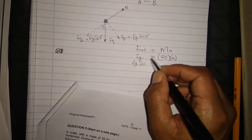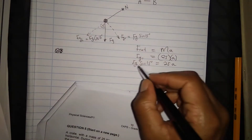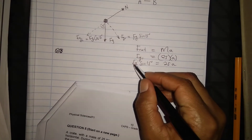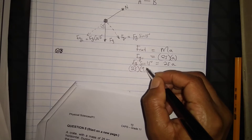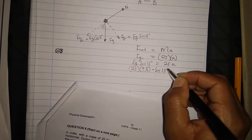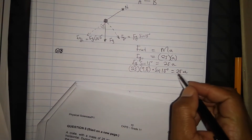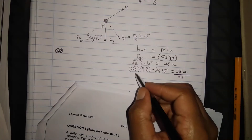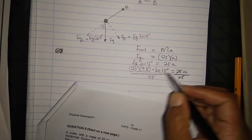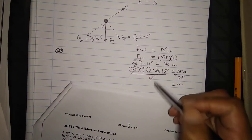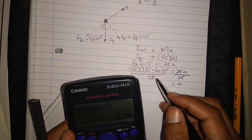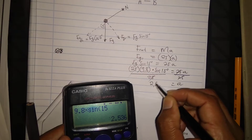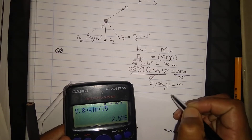So F_G parallel equals F_G times sin 15° equals 25a. Substituting, F_G is mass times gravitational acceleration: 25 times 9.8 times sin 15° equals 25a. Dividing both sides by 25, the acceleration is 9.8 times sin 15°, which equals 2.553 meters per second squared, down the incline.